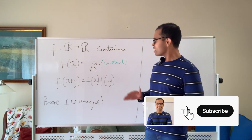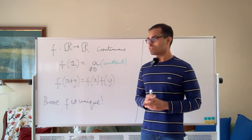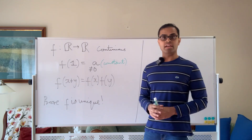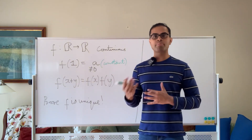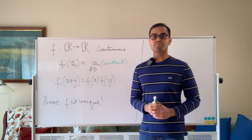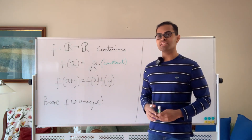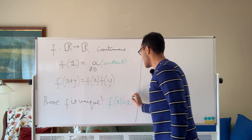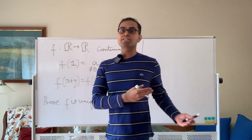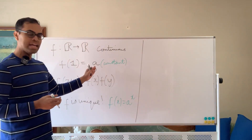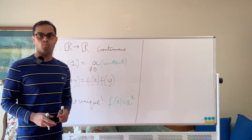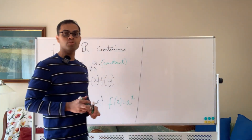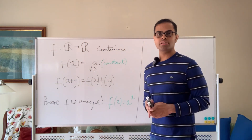We have a continuous function f from ℝ to ℝ, where f(1) equals a, a non-zero constant, and f(x+y) equals f(x) times f(y). We want to prove that f is unique. The non-zero constant a can be anything — 2, 3, pi, etc. We want to show there's only one continuous function with this property, and once we've proven that, we know the function has to be the famous power function f(x) = aˣ. We know this function satisfies the properties: a¹ = a and a^(x+y) = aˣ · aʸ. So we're going to prove this rigorously, and let's talk through the thinking process while we construct the proof.